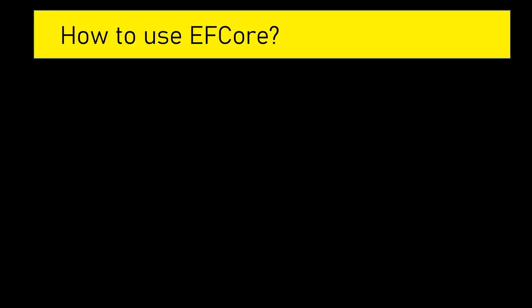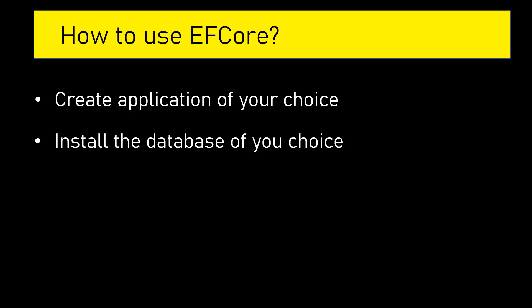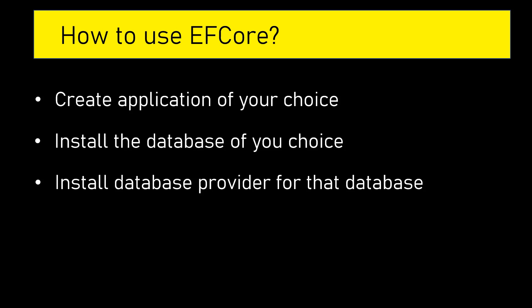I'll brief you the steps we need to take to use Entity Framework Core in our application. The first step is to create an application of our choice — it could be a console application, web API, web application, or mobile. Then we should have the database already installed in our system; for example, if you are going to use SQL Server it should be there in your system. Then you should install the database provider for that database. For each database there will be a different database provider — for SQL Server it will be different, for SQLite it will be different — and you should install that database provider.